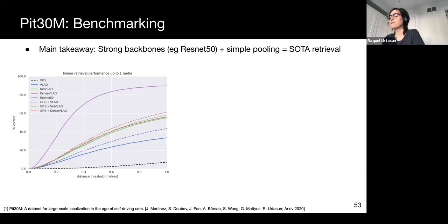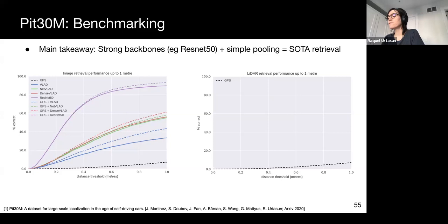Another thing that we can do is, instead of searching for nearest neighbor in the entire database, use GPS as initialization, and then search only within an area of, for example, 20 meters around it. This consistently improves results for all methods, and improves our ResNet as well.